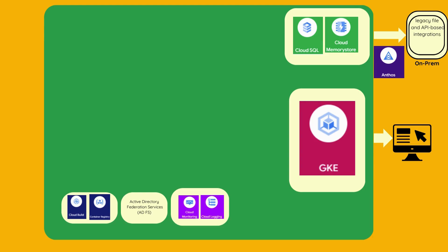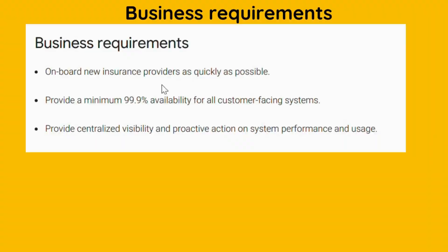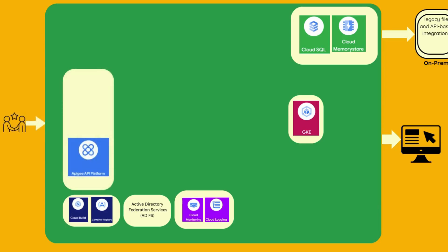Moving to business requirements. To onboard new insurance providers as quickly as possible, Apigee is a good option for creating APIs that can be quickly configured and deployed for new insurance providers. Cloud Pub/Sub can be used for real-time data integration and processing from new providers. If it were a healthcare provider instead of an insurance provider, I would consider using the Healthcare API for data ingestion; however, for now I do not consider that option.